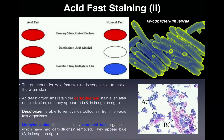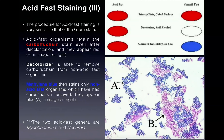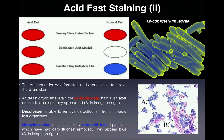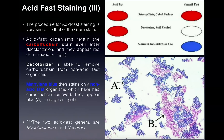Looking at this micrograph, the organisms labeled B are red — or a fuchsia color, hence the name carbol fuchsin. These are your acid fast organisms. Zooming in you can see these are in fact bacilli, which makes sense because pretty much all acid fast organisms are bacilli, such as Mycobacterium tuberculosis and Mycobacterium leprae. In the lab the species used was the non-pathogenic Mycobacterium smegmatis, also a bacillus. The organisms that are blue are non-acid fast because they do not retain the carbol fuchsin after the decolorization step.